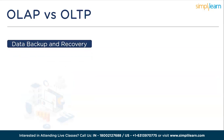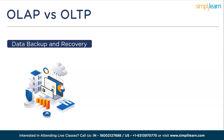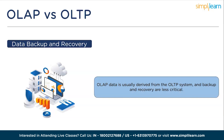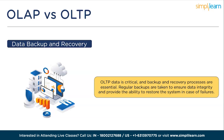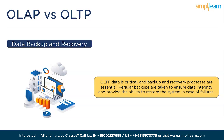The ninth point is data backup and recovery. OLAP is usually derived from the OLTP system, and backup and recovery are less critical since it can be regenerated from the transactional database if necessary. In contrast, OLTP data is critical, and backup and recovery processes are essential. Regular backups are taken to ensure data integrity and provide the ability to restore the system in case of failures.